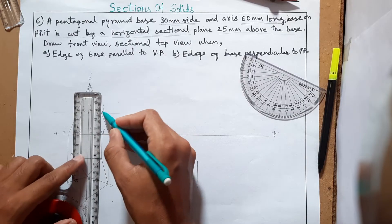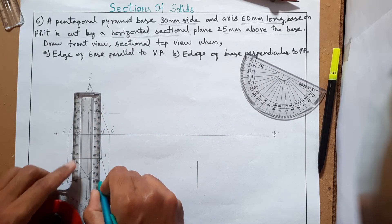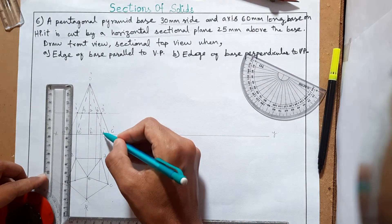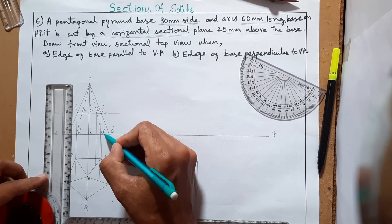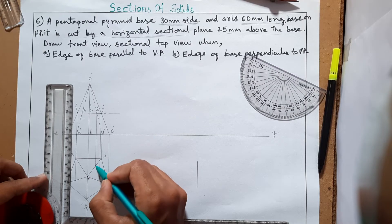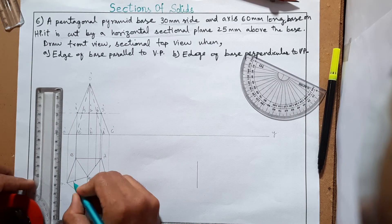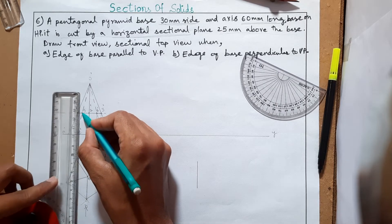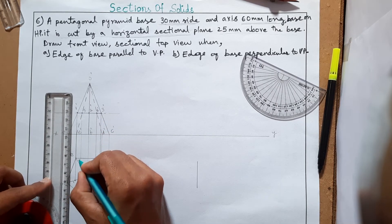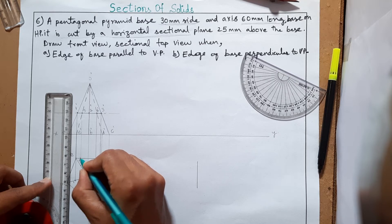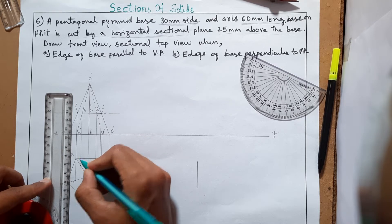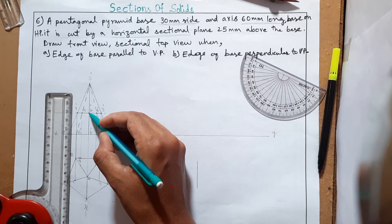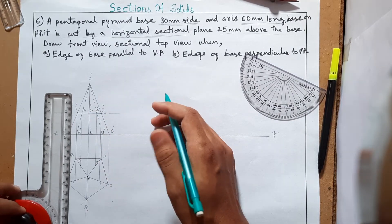Project point 3 down to the top view. Point 4 is between O and D-dash in the front view, so it falls between O and D in the top view. Point 5 is located similarly. So points 1, 3, 4, and 5 are now marked in the top view.